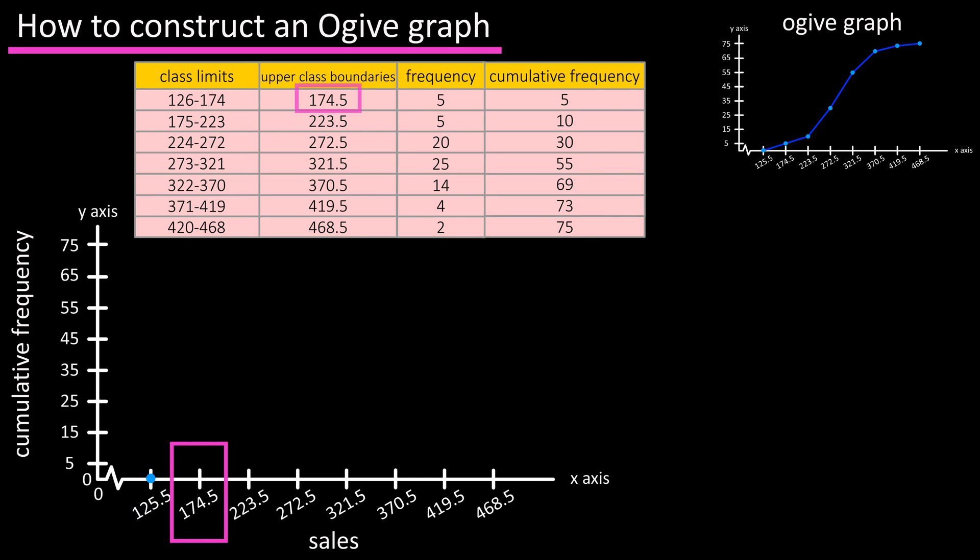Next is the upper class boundary of class one, 174.5 here in the x-axis, where we have a cumulative frequency of five. So we find our point of intersection, x equals 174.5 and y equals five, and plot the next point.